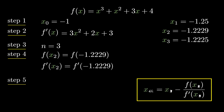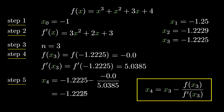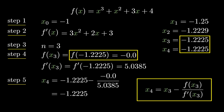Putting n=3 in Newton-Raphson: x₄ = x₃ − f(x₃)/f'(x₃). f(x₃) = f(−1.2225) = 0.002, and f'(x₃) = f'(−1.2225) = 5.0385. Substituting these, we get x₄ = −1.2225. The ratio f(x₃)/f'(x₃) ≈ 0, so x₄ = x₃. The function value confirms x = −1.2225 is the root of x³ + x² + 3x + 4.